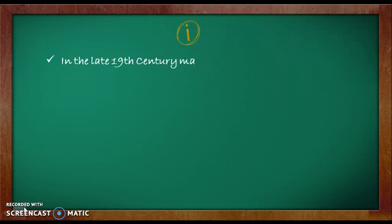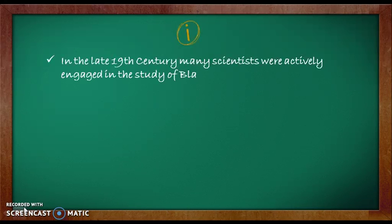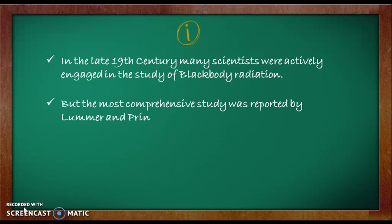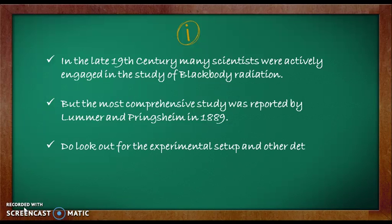Moving forward, in the late 19th century many scientists were actively engaged in the study of blackbody radiation, but the most comprehensive study was reported in 1889 by Lummer and Pringsheim. The experimental details about the setup can be very easily found on the internet. In this video I am not going to talk about those details — if anybody is interested they can easily find them and study about them.